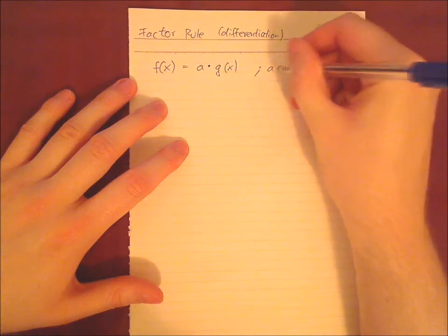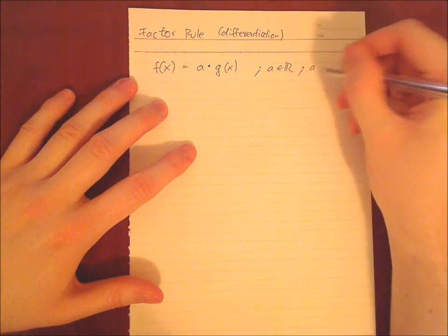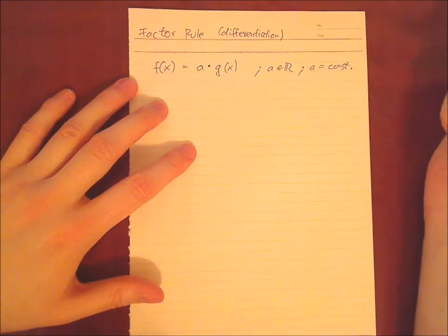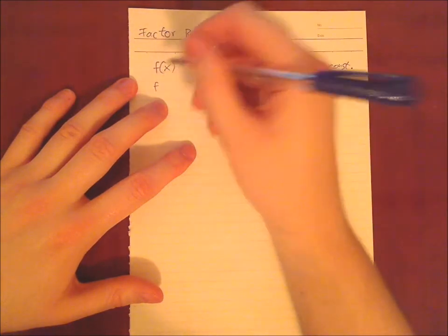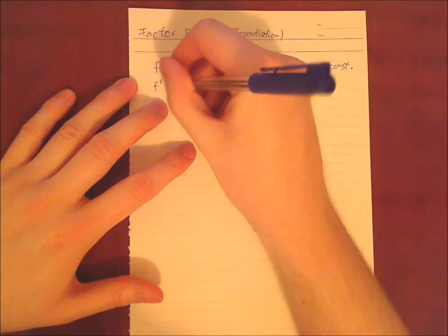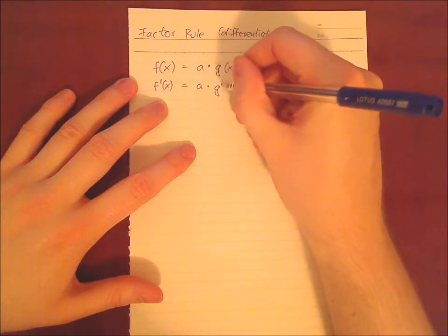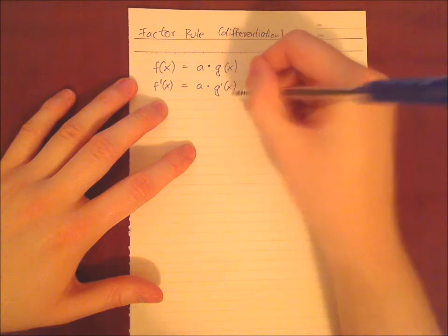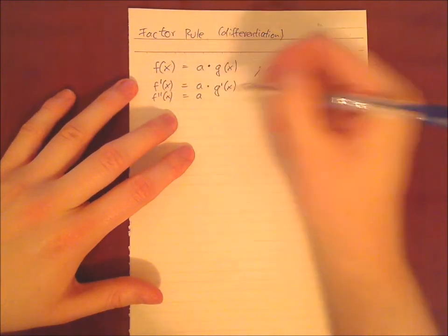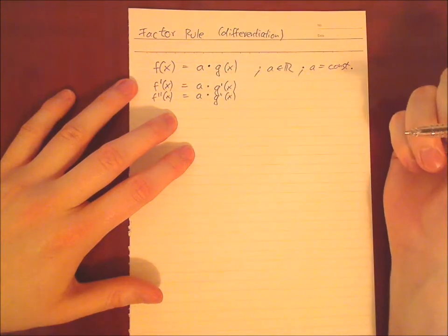a is like element of ℝ and we also say a is constant. And this is how it works, quite easy. This is probably the easiest rule when you want to differentiate a function. We have the first derivation, which is then a times the first derivation of g. And it goes on like this. The thing is, the factor always remains where it is. Right? It's very easy.